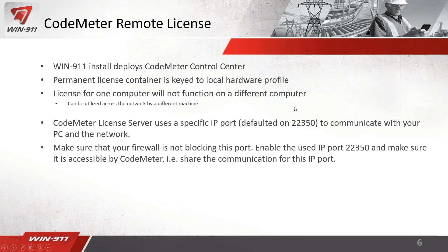A license from one computer will not function on another — it's tied to that hardware — but it can be utilized across the network. The CodeMeter license server uses IP port 22350 by default. There's really no need to change that unless your environment is blocking specific ports. Make sure your firewall is not blocking this port; enable the use of IP port 22350. It's already in there by default and I'll show you that shortly.